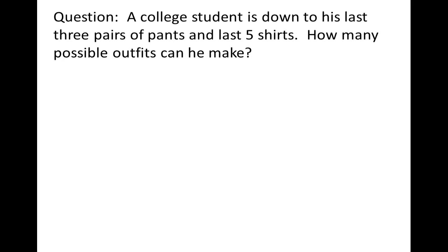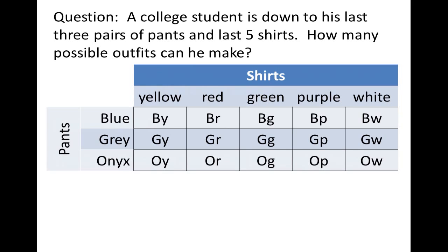Another principle we're going to talk about is called the multiplication principle. A college student hasn't done laundry in a while — he's down to his last three pairs of pants and his last five shirts. How many possible outfits can he make? We'll assume he wears pants on his legs and shirts over his head. We can list all possibilities in a table. He has options of blue, gray, or onyx pants — onyx is the same as black, but black and blue both start with B, so we chose onyx instead.